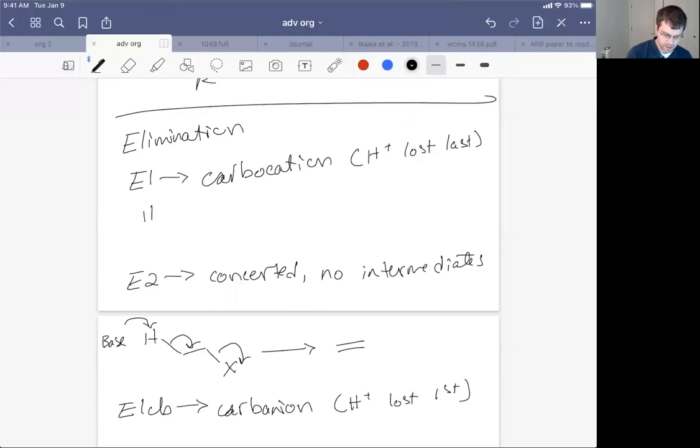In the E1 process, the leaving group leaves first to form a carbocation, and then the H plus leaves to form our alkene. So we have a carbocation intermediate forming.